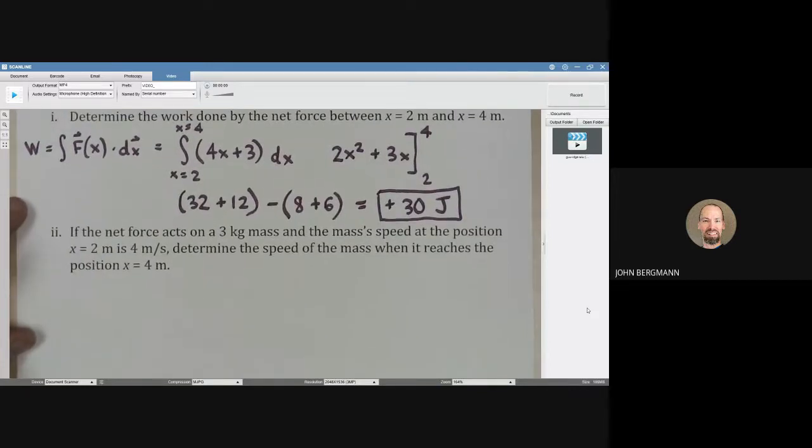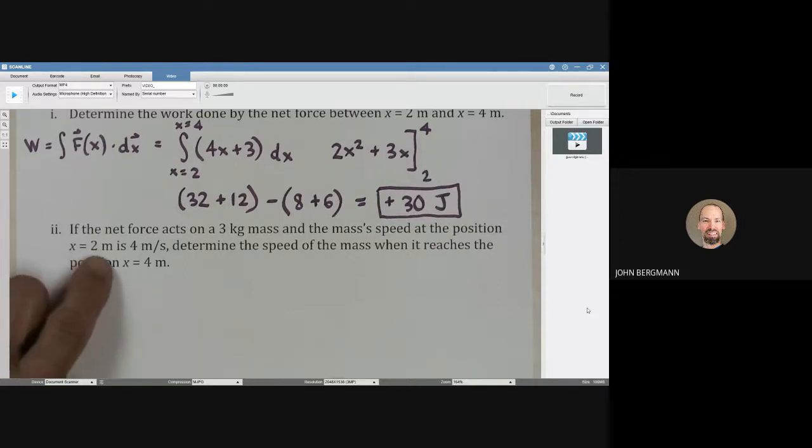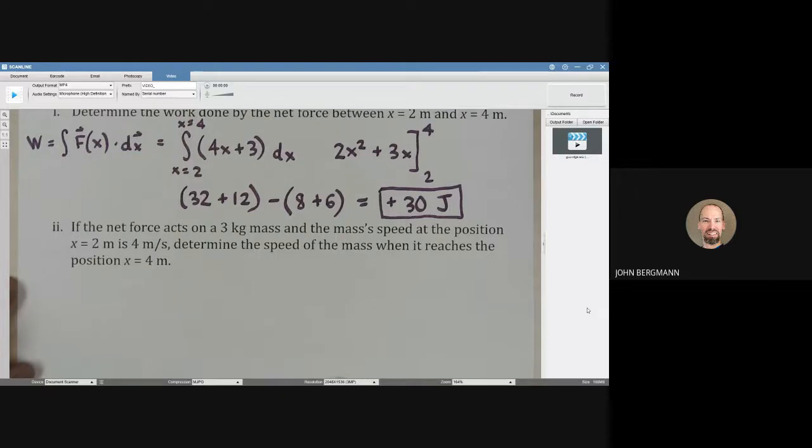Let's do part 2 here. If the net force acts on a 3 kilogram mass and the mass's speed at the position x equals 2 meters is 4 meters per second, determine the speed of the mass when it reaches the position x equals 4 meters.